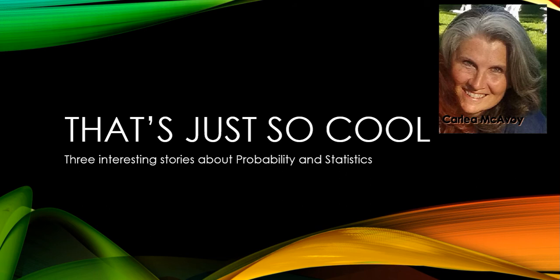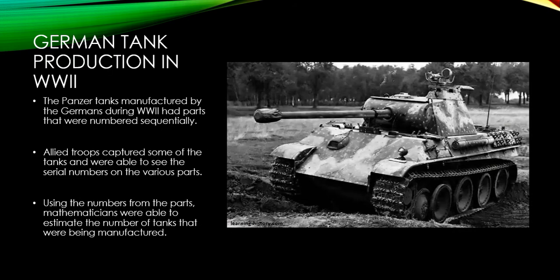The first story I want to talk about is the use — or the production — of German tanks in World War II. The Panzer tanks manufactured by the Germans had parts that were numbered sequentially. So a part numbered 5 was the fifth one produced, or 75 means it was the 75th one produced. The Allied troops captured some of these tanks and were able to see the serial numbers on the various parts, and using those numbers, mathematicians were able to estimate the total number of tanks being manufactured from month to month.